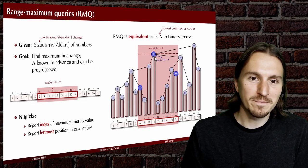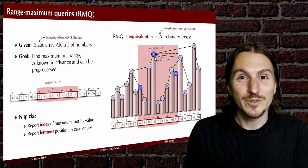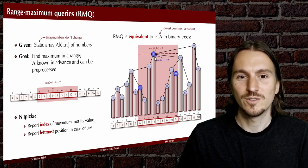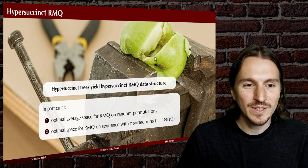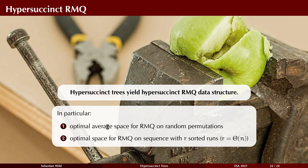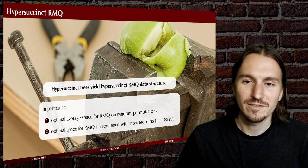A classic observation is that we can construct from the array the so-called Cartesian tree: find the maximum in the array, make it the root, which splits the array into left and right parts, and then the Cartesian trees recursively built for these parts become the left and right children. We can then translate RMQ queries to a query solely on the tree: take the outermost elements in our range — indices 6 and 14 — find the corresponding nodes by in-order index, and the range maximum query is the lowest common ancestor of those two nodes. Applying our hyper succinct trees, we obtain two new results: an RMQ data structure with optimal expected space for random permutations, and an optimal-space data structure for RMQ on sequences with r sorted runs.